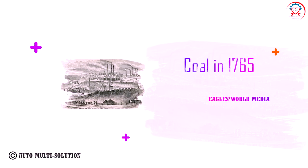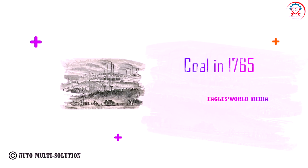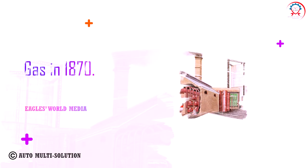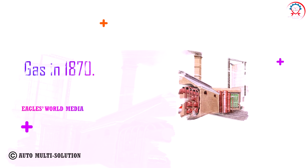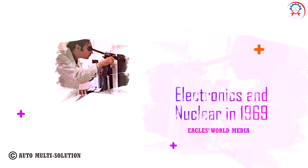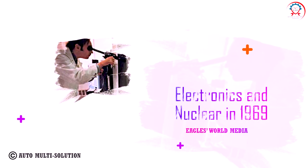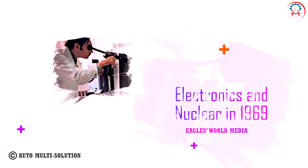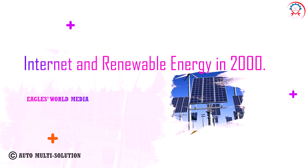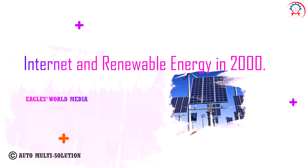First industrial revolution: coal, in 1765. Second industrial revolution: gas, in 1870. Third industrial revolution: electronics and nuclear, in 1969. Fourth industrial revolution: internet and renewable energy, in 2000.